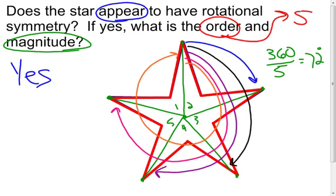So magnitude of 72 degrees and an order of 5 for my star here that appears to have rotational symmetry. And those are the two examples that I'm going to show you. And if you have any other questions on anything else dealing with rotations or rotational symmetry, please ask.